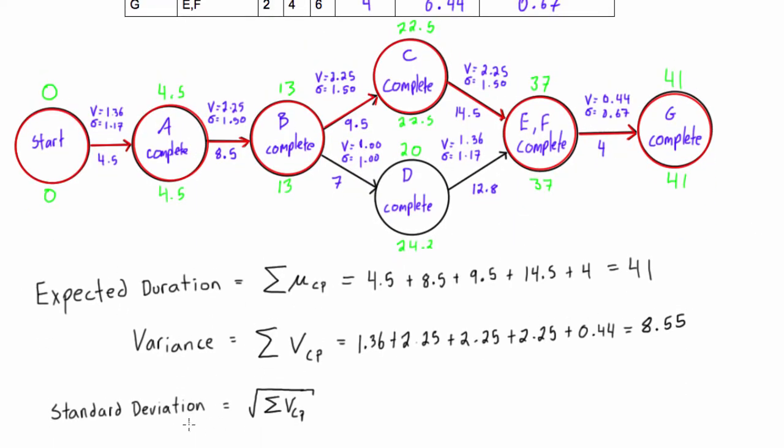All right, so the last thing here to look at is standard deviation. You can't actually just go and add all of the standard deviations for each activity along the critical path, and this has to do with something called the central limit theorem.